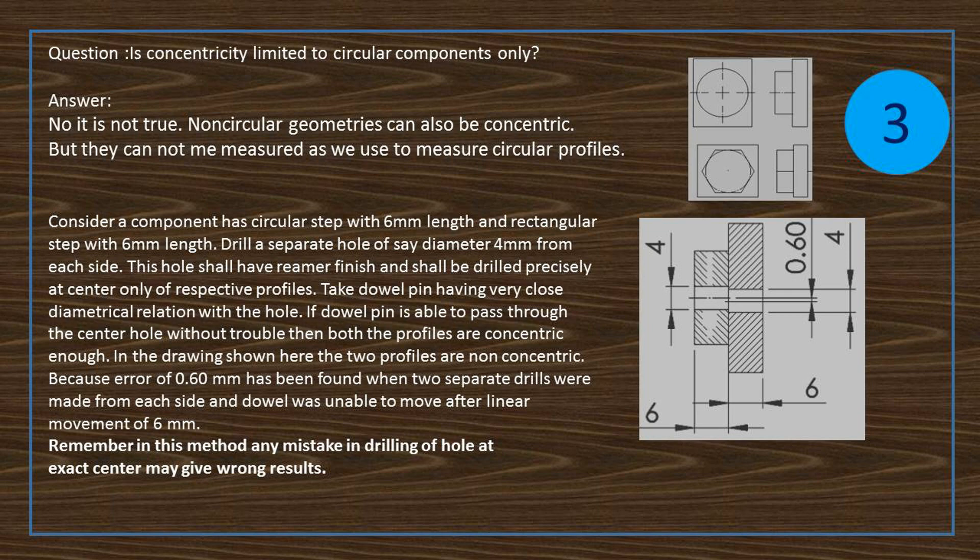In the drawing shown here, the two profiles are non-concentric because error of 0.6 mm has been found when two separate drills were made from each side, and dowel was unable to move after linear movement of 6 mm. Remember in this method any mistake in drilling of hole at exact center may give wrong results.